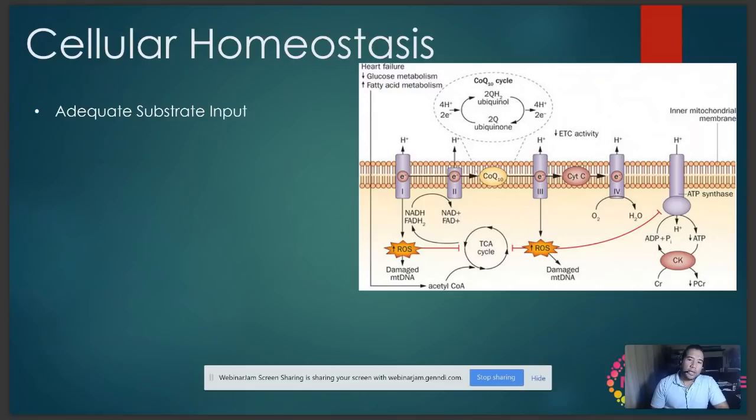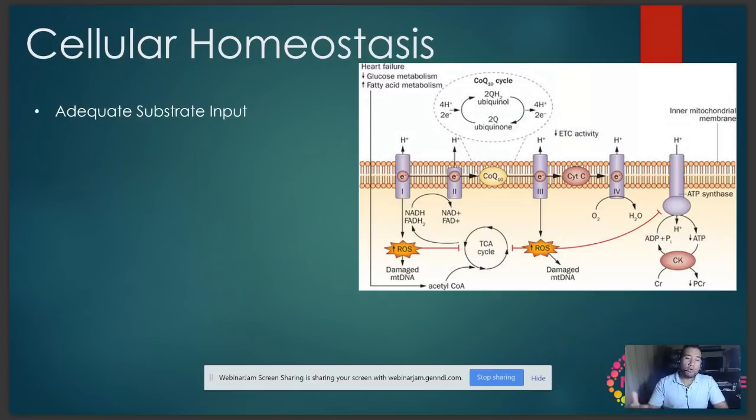Substrate input is highly controlled by cell membrane structures. In order for these substrates to get into the cell, they have to get into the body, and that is controlled by the gut lining. The gut lining absorbs all of these nutrients from food, and gut bacteria produce a lot of these nutrients in the gut from digesting our food. So just there alone, the microbiome plays a significant role.